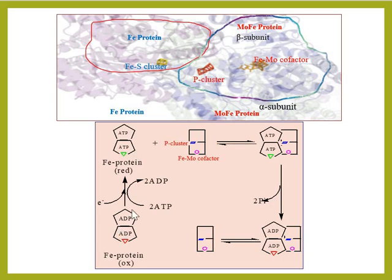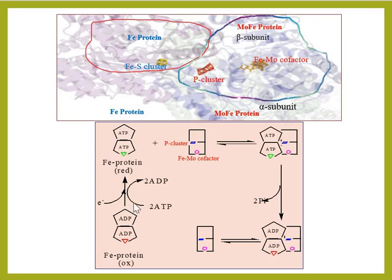This is the structure of the Fe protein, shown here in its oxidized state. After accepting electrons from ferredoxin — which come from the photosynthetic or oxidative process — the oxidized Fe protein becomes reduced, shown by the green triangle. The oxidized form is shown by the red triangle. During this electron transfer, 2 ATP will convert into 2 ADP.